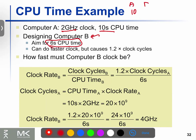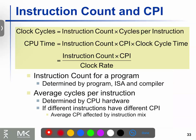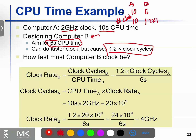Computer A and Computer B: Computer B CPU time is 6 seconds. We have to find the number of clock cycles. The number of clock cycles is equal to 10 to the power — this is equal to 1.2 times 10, which is 12. And the number of clock cycles equals 2.